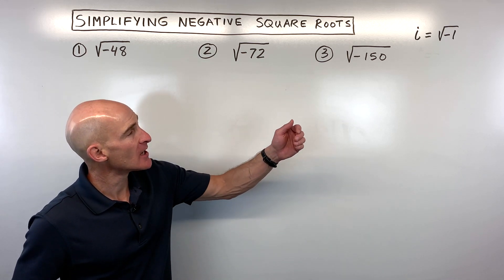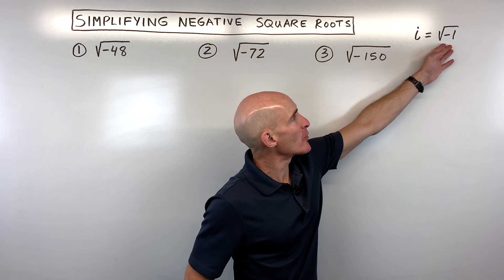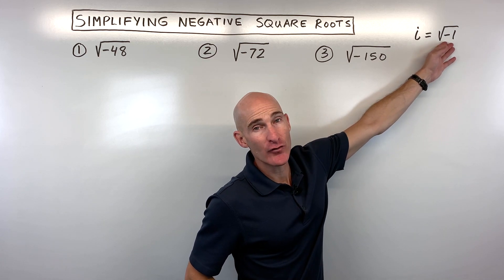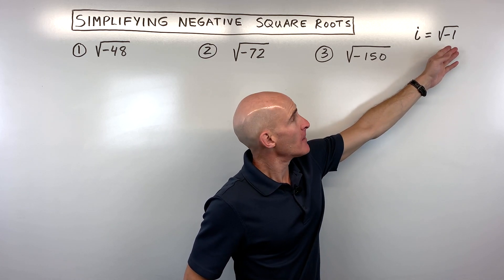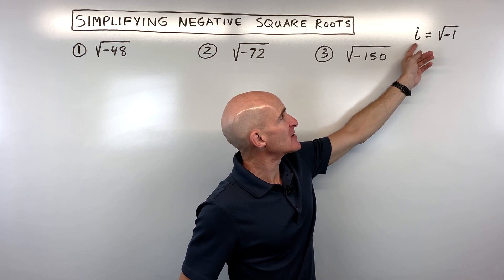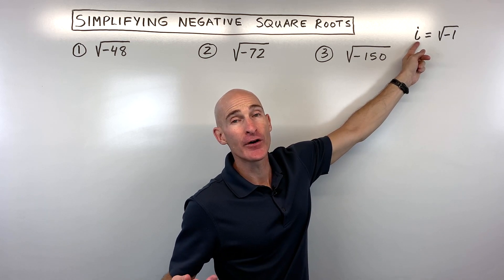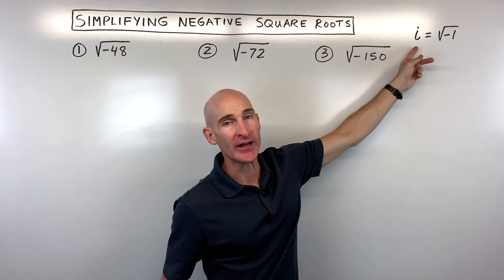The first thing we want to talk about is: what exactly is the square root of negative one? The square root of negative one — we represent that with the letter i for imaginary.